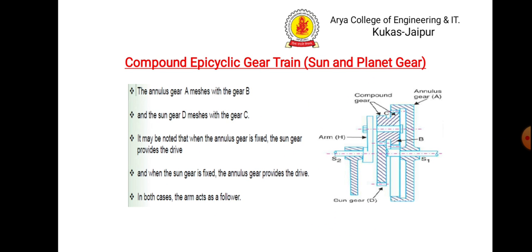The annular gear a meshes with gear b, and the sun gear d meshes with gear c. It may be noted that when the annular gear is fixed the sun gear provides the drive, and when the sun gear is fixed the annular gear provides the drive. In both cases the arm acts as a follower.